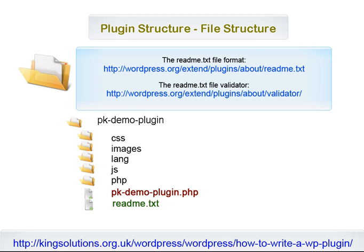We'll discuss that file structure in more detail another time. WordPress does recommend the inclusion of a readme file for all your plugins. A description of the format can be found at WordPress.org/extend/plugins/about/readme.txt. WordPress also provides a readme file validator at wordpress.org/extend/plugins/about/validator, so they must consider the inclusion of this file important.